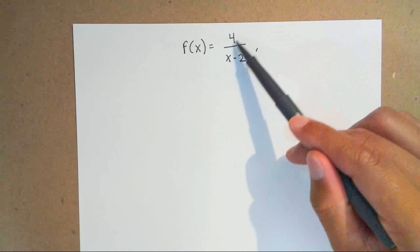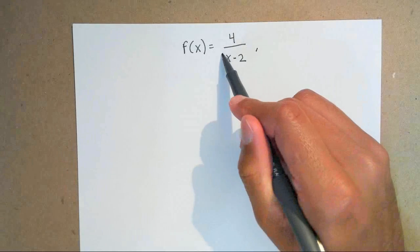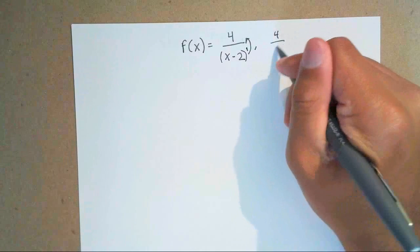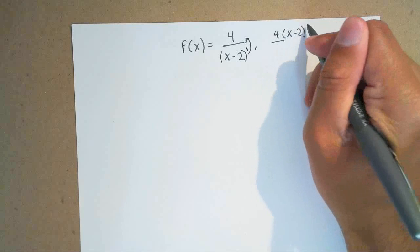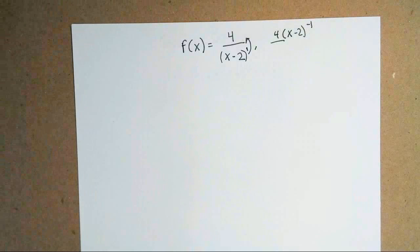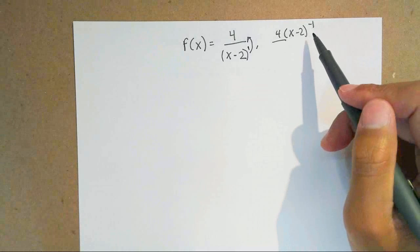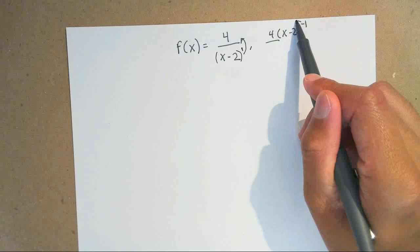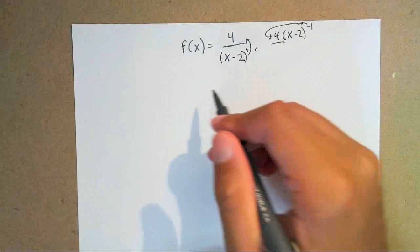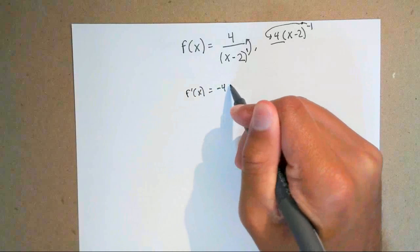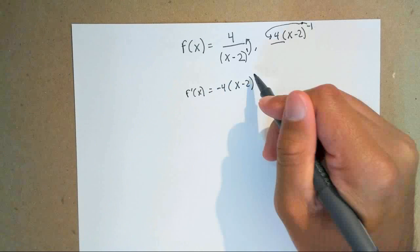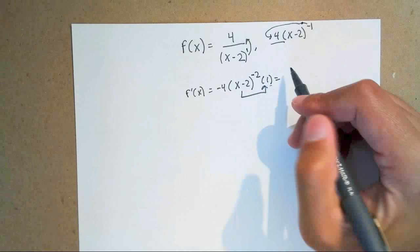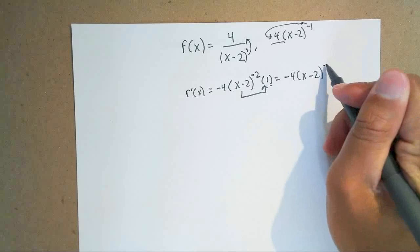Put the denominator in parentheses raised to the first power and bring it up so that you have 4 times (x minus 2) raised to the negative first power. Now it's just a basic chain rule — there's no variable with the 4, so you take the negative 1, multiply it with the 4 to get negative 4, keep the inside the same, subtract the exponent by 1 to get negative 2, and the derivative of (x minus 2) is just 1. So your first derivative is negative 4 times (x minus 2) to the negative 2.